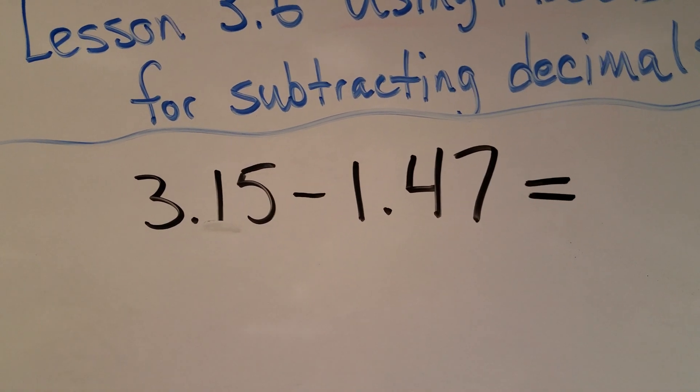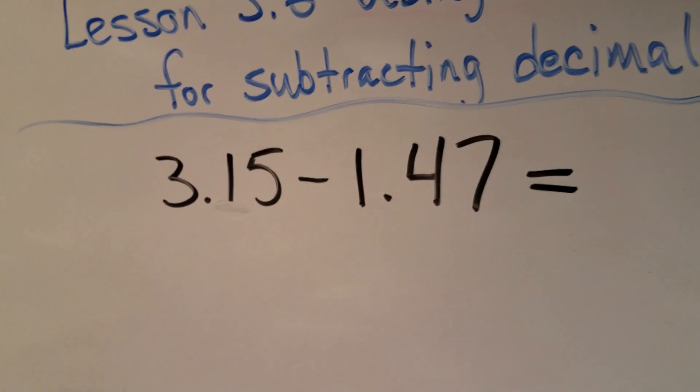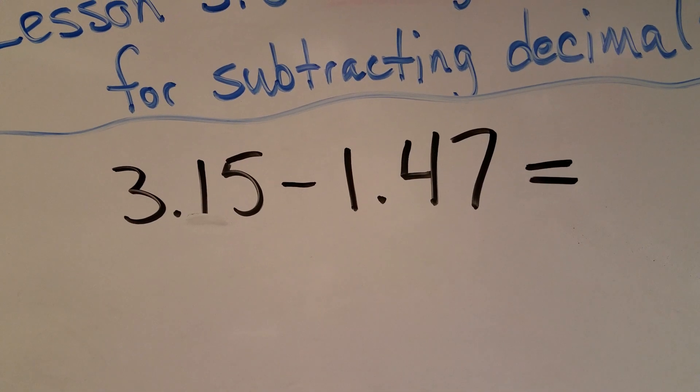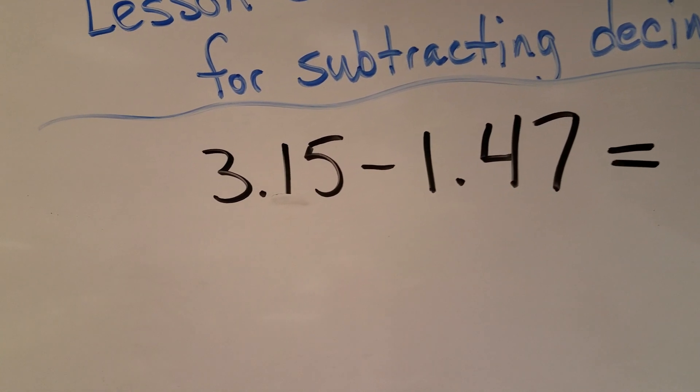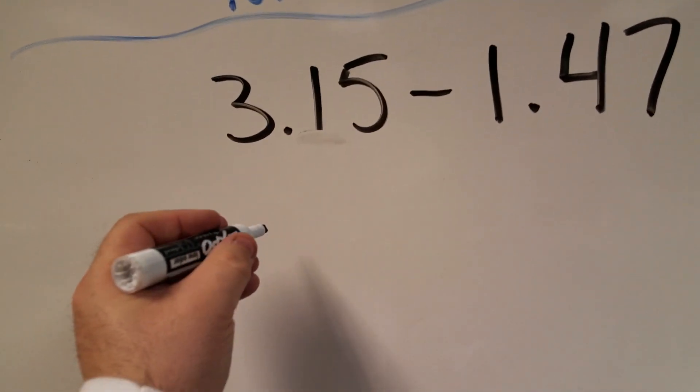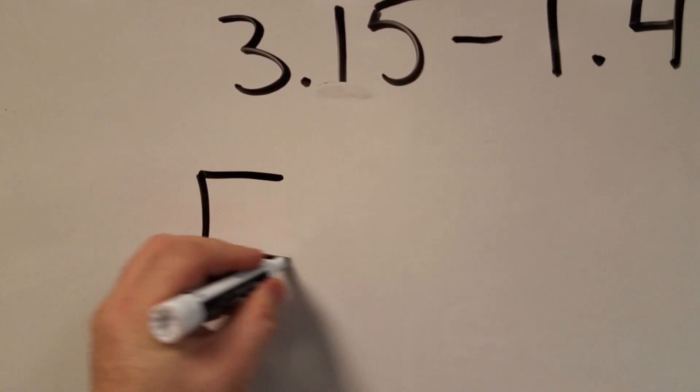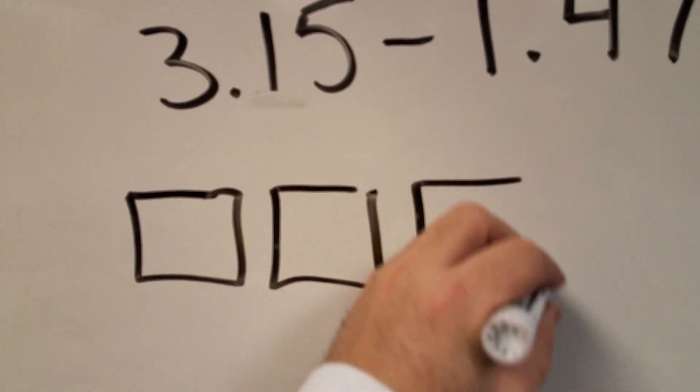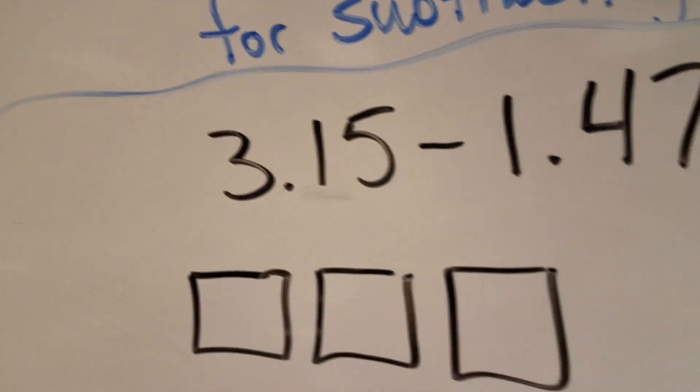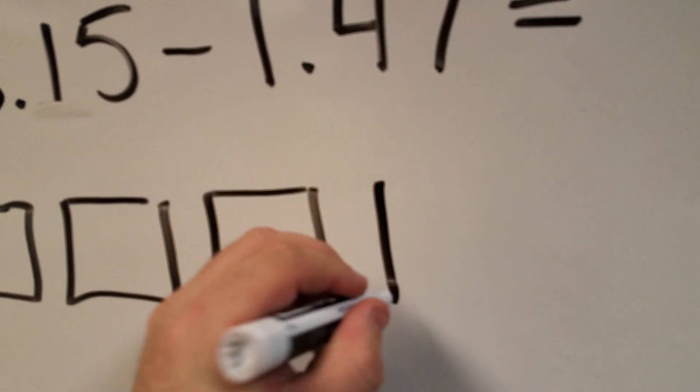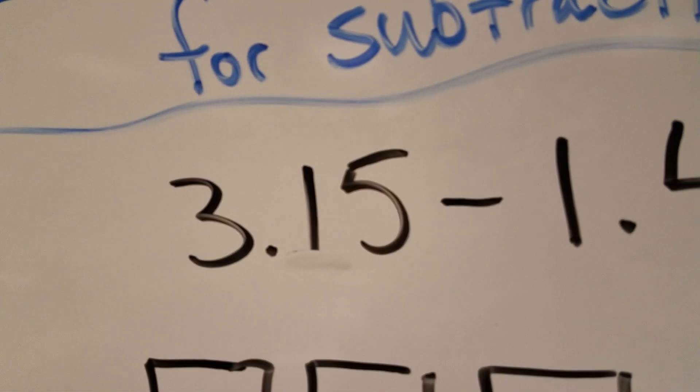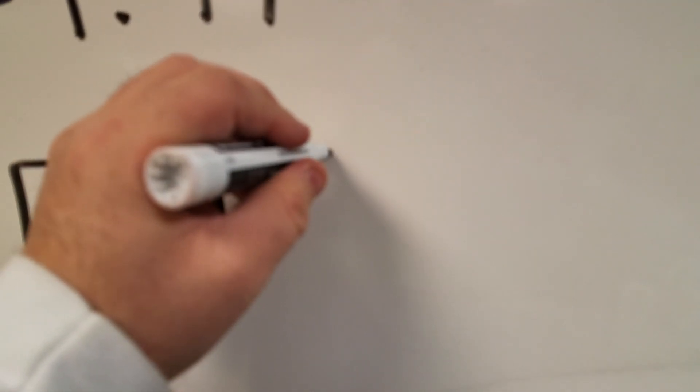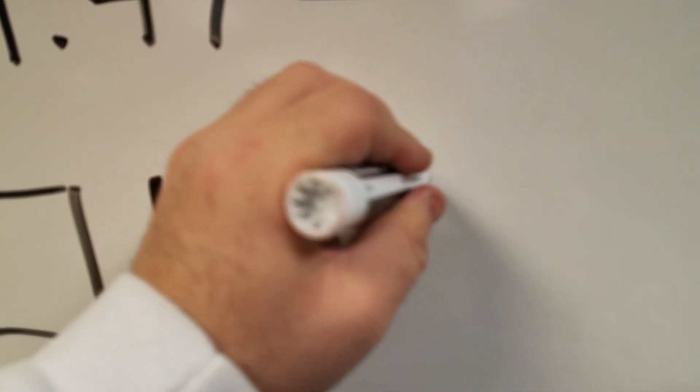The first thing I'm going to do is use those base 10 blocks to illustrate the first part of the problem. So I have three wholes so I'm going to draw three squares, and then I have one tenth so that's one of my longs, and then I have five hundredths so I'm going to go one, two, three, four, five.